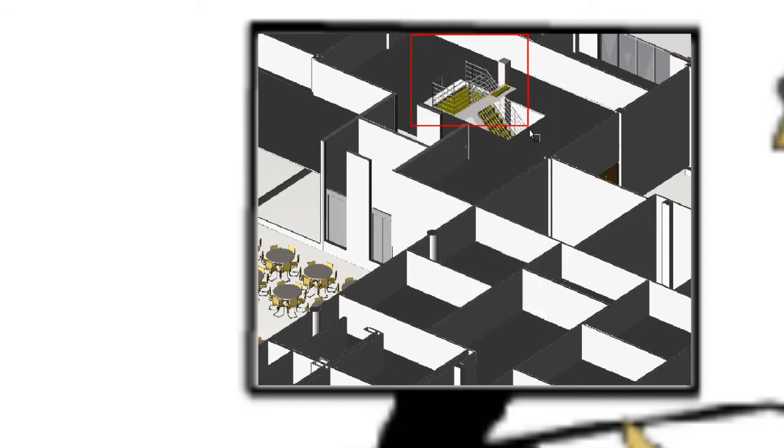When Jeff sees a problem with the design, he can easily do a markup. Here, he's indicating that the staircase orientation should be changed.